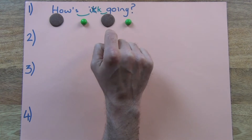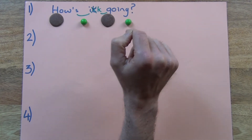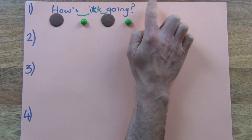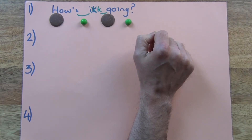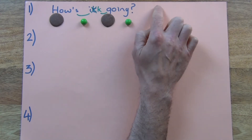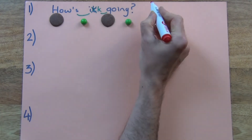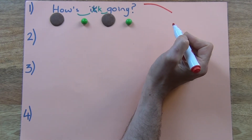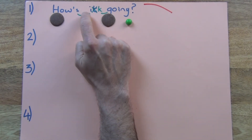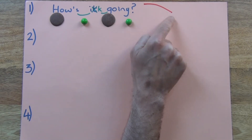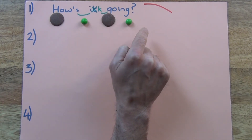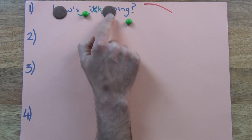Now the last thing to consider is the tune, the melody. Does the question go up or down? Listen again and choose up or down: how's it going? It went down. How's it going? This is a glide down. So those are all the parts of the question — linking, rhythm and the tune. Listen and repeat after me: how's it going? How's it going? Now you try.